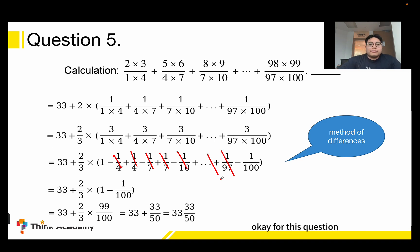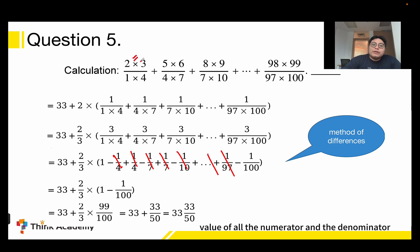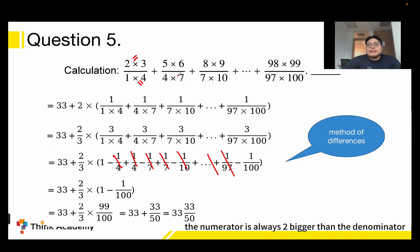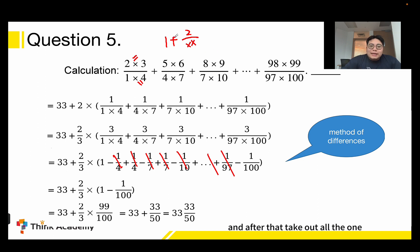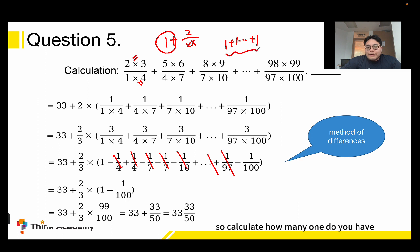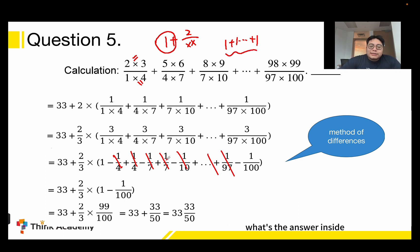To summarize this question: the first step is to calculate the values of all the numerators and denominators to find the pattern. After that, you find the numerator is always 2 bigger than the denominator, so rewrite each term as 1 + 2/denominator. Then collect all the 1s, count how many there are, and finally use the method of differences to find what's inside the bracket.